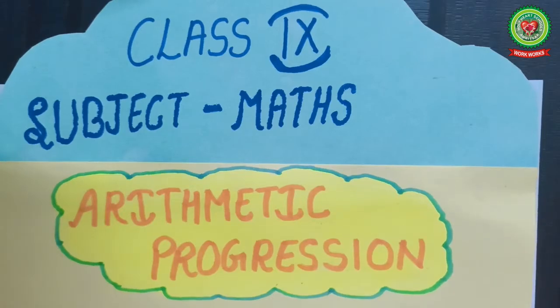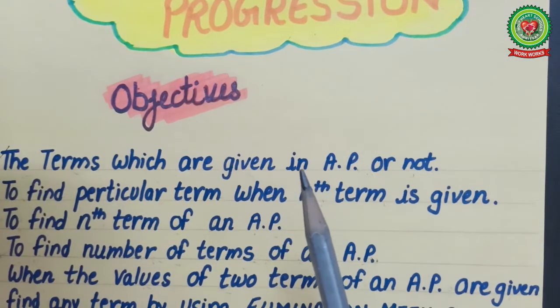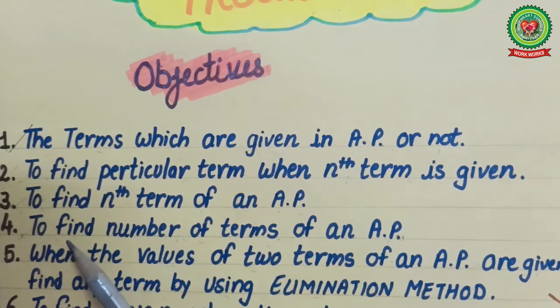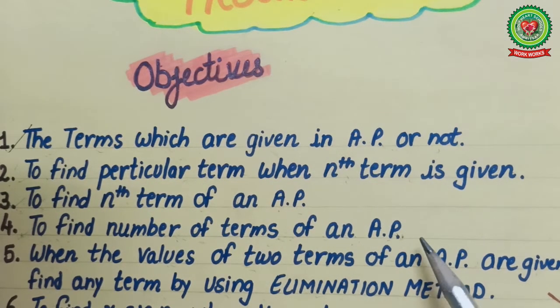Hello students, today we will continue with the topic of arithmetic progression. Earlier we have done the first three objectives. Today we will continue with the fourth objective: to find the number of terms of an AP.